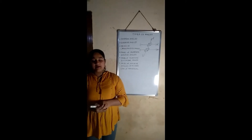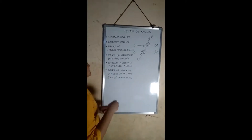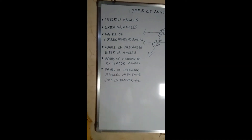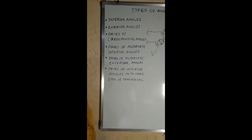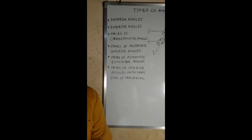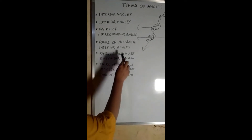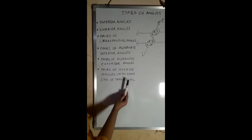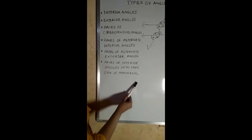Let's talk about types of angles. There are six types of angles. They are interior angles, exterior angles, pairs of corresponding angles, pairs of alternate interior angles, pairs of alternate exterior angles, and pairs of interior angles on the same side of the transversal.